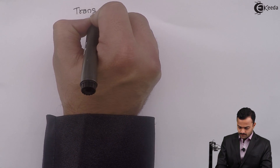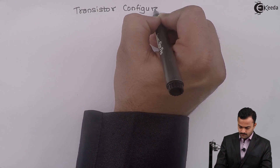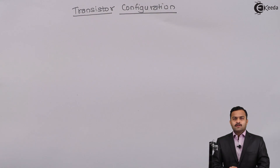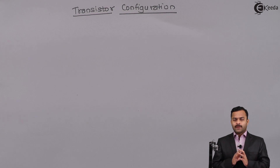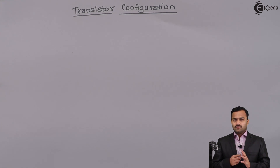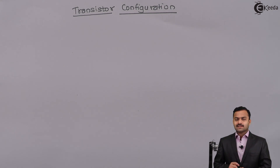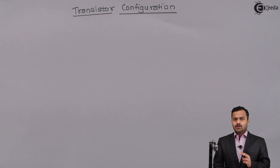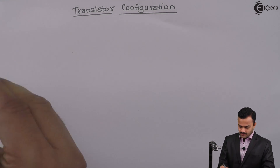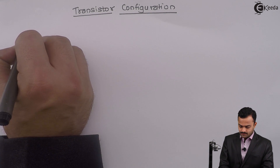In this video we are going to see how differently a transistor can be configured. The topic is transistor configuration. Suppose I want to operate a device — I need to give an input and get an output, so ideally I should have four terminals. But the problem with the transistor is it has only three terminals, so one terminal must be used as a common terminal for both input and output. Based on that, we have different transistor configurations.